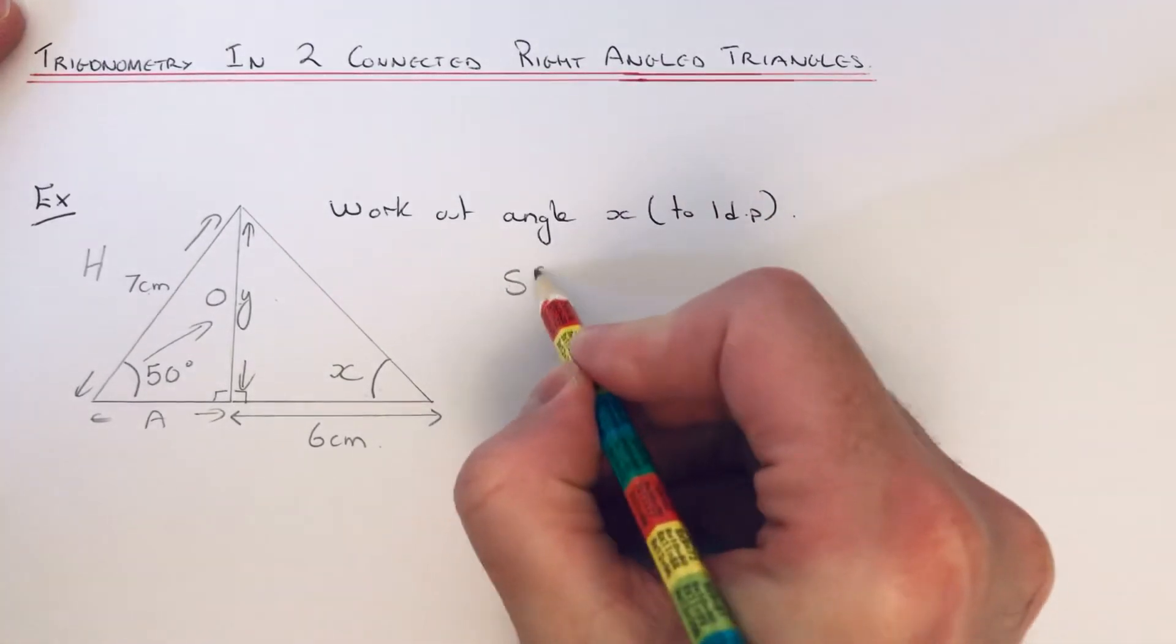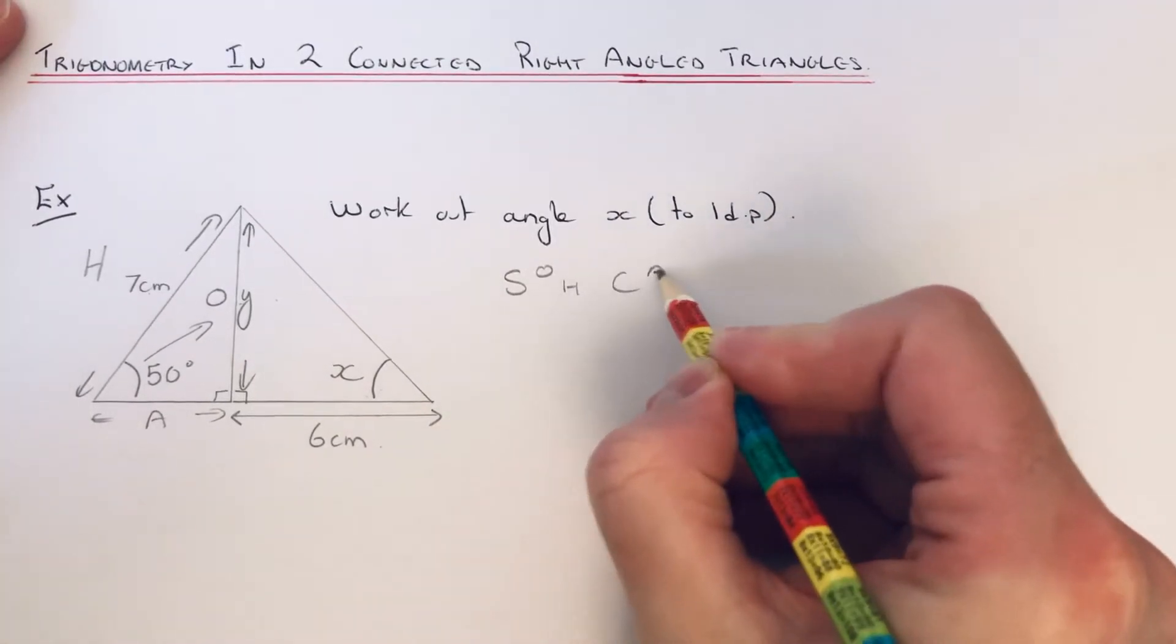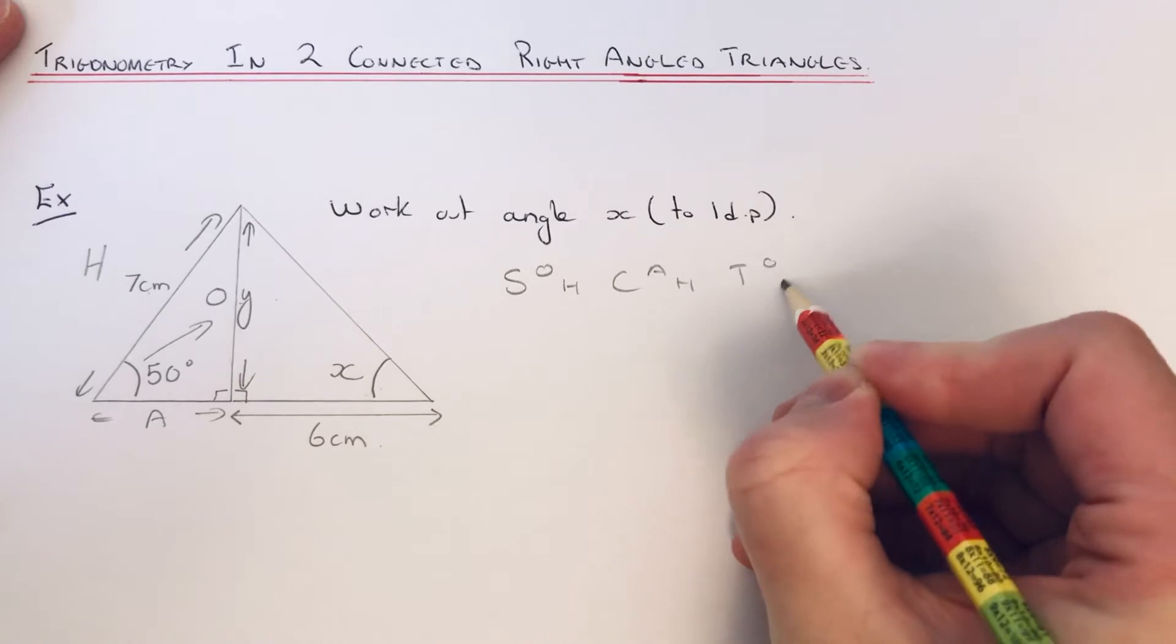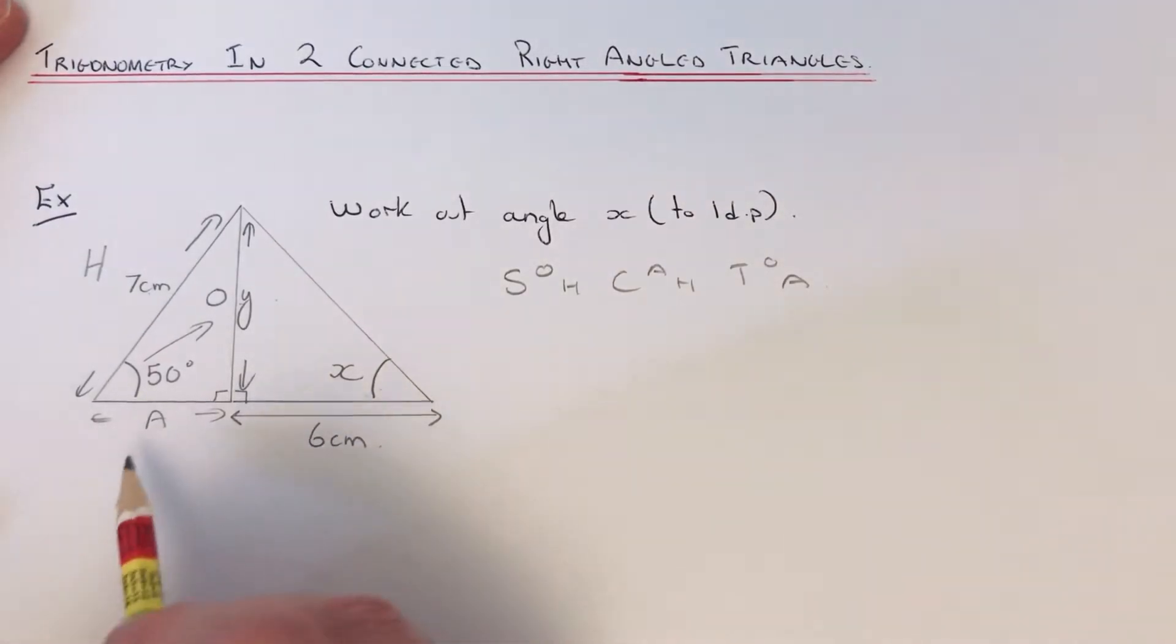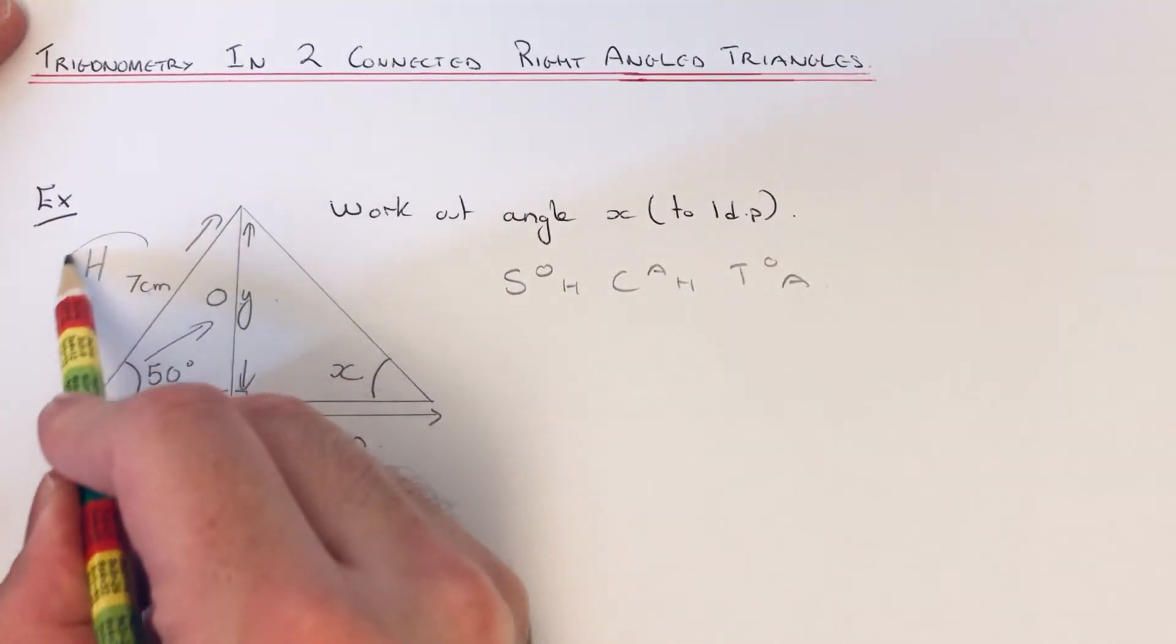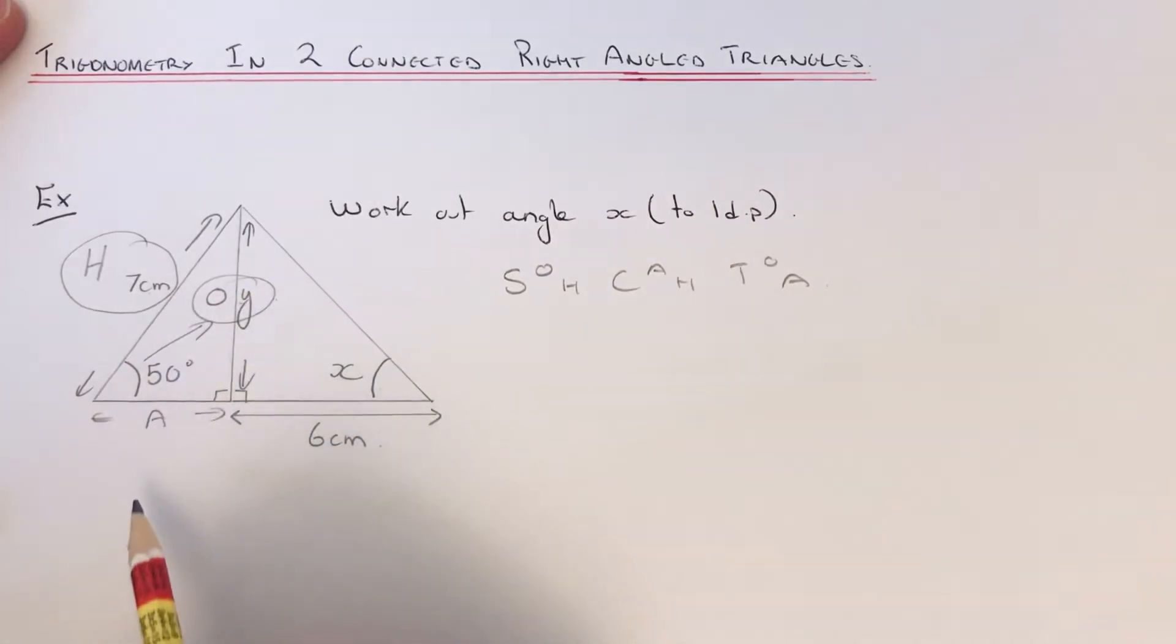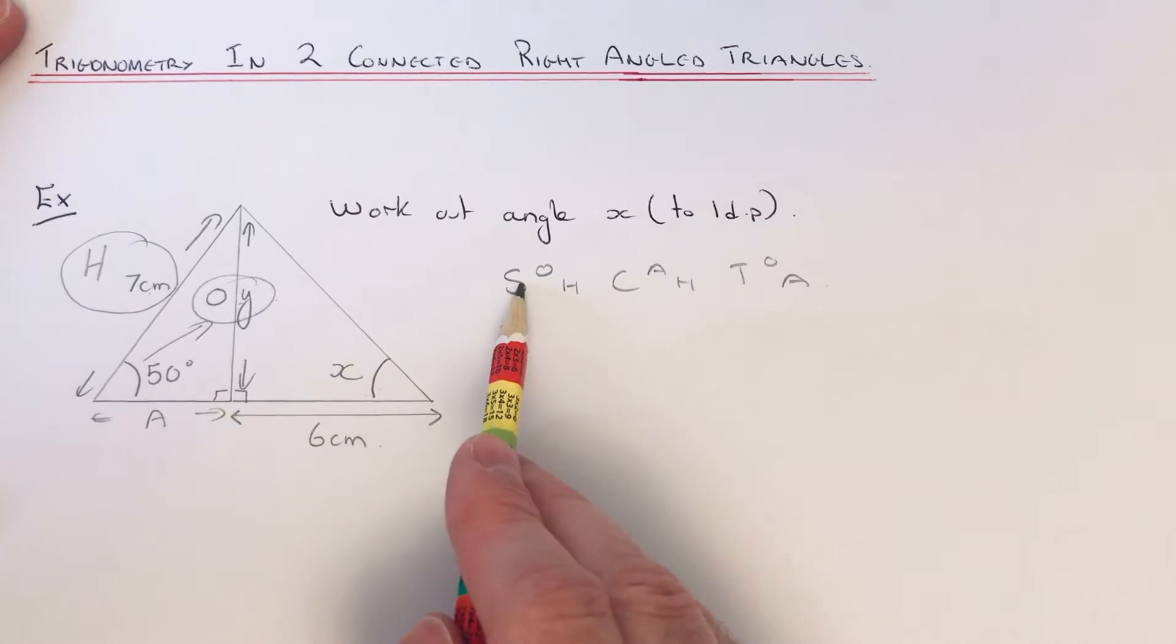If we write down SOHCAHTOA, then we can decide which one of our three formulas to use. We've got the hypotenuse and we need to work out the opposite, so the one with H and O in is sin.